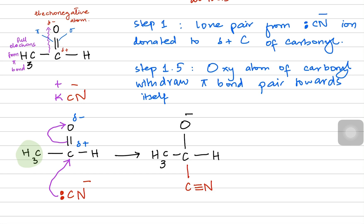Now the oxygen has a negative charge, making it a nucleophile. Oxygen realizes it wants to donate its lone pair and accept something positive from the surroundings — which is the hydrogen ion from the acidic environment. So oxygen donates the lone pair to the hydrogen ion and accepts it to make a bond, forming an OH group attached to the carbon.